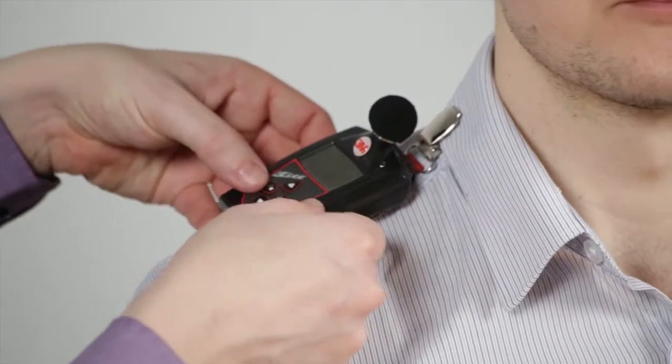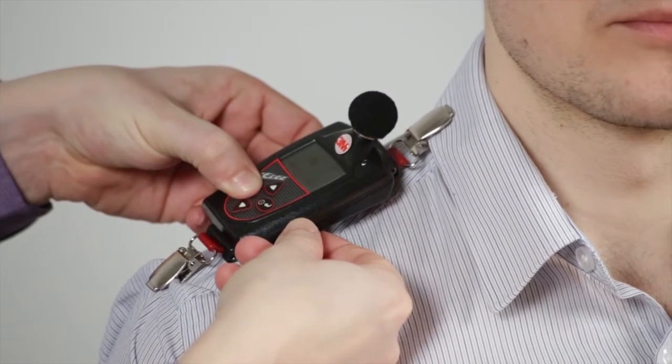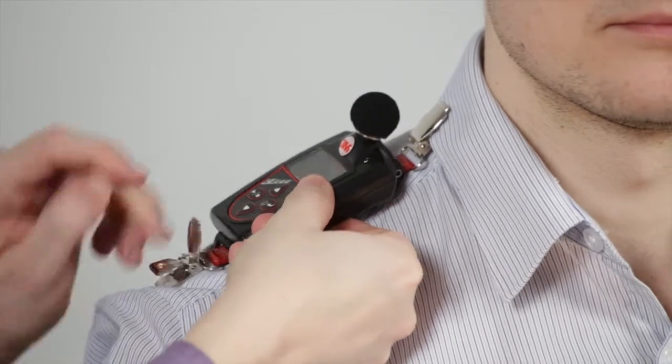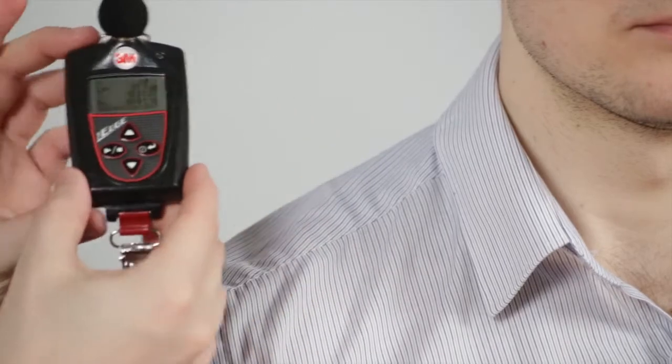Now that our worker has finished their daily routine, we're going to stop the recording on the edge dosimeter, press and hold for three seconds. Then we simply detach the clips, remove it from the worker, and then we can now download this through the DMS software on a laptop.